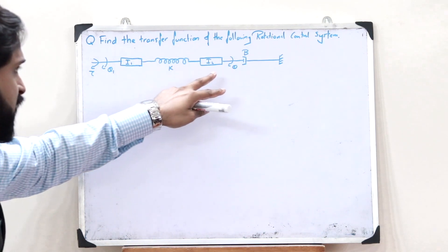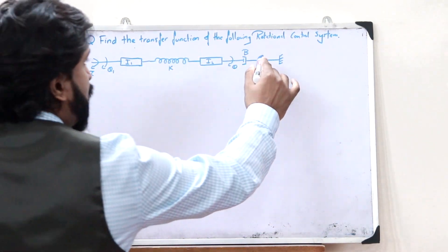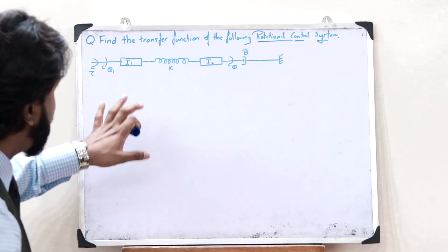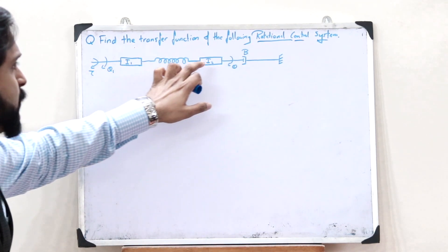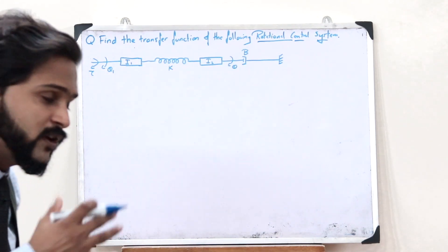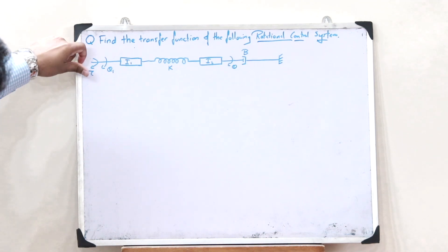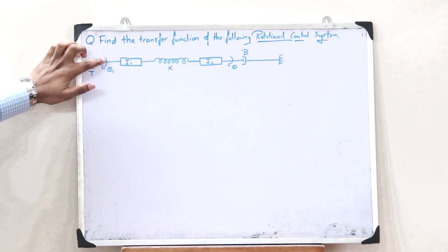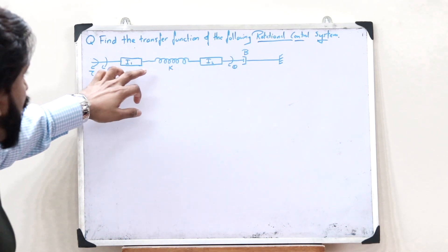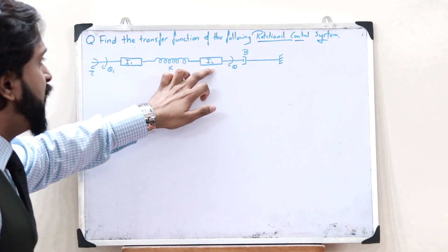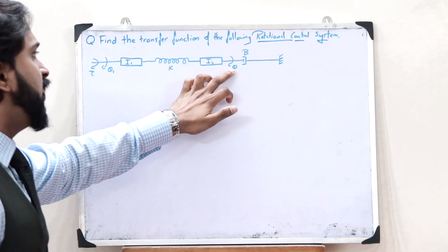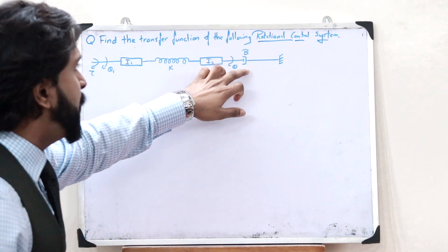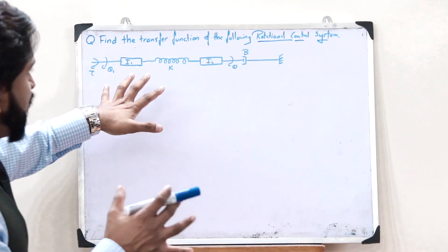Here what we observe is that we have two objects. In the case of a rotational control system we do not consider mass; rather, instead of mass we consider the moment of inertia. Here we have two objects with moment of inertia I1 and I2. An external rotating torque is applied, and therefore an angular displacement of theta1 is observed. This also contains a spring of spring constant K, and here we have another object of moment of inertia I2 where another angular displacement theta is observed, and here we have a dashpot or a damper of damping constant B.